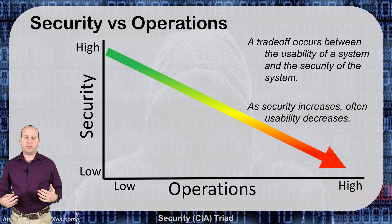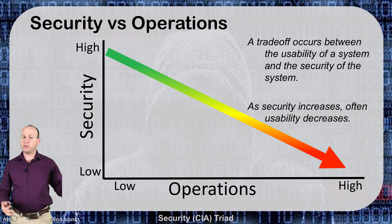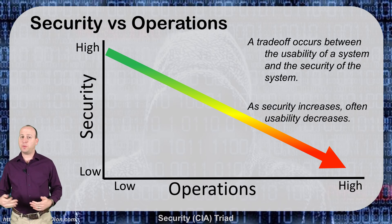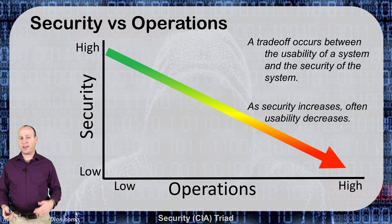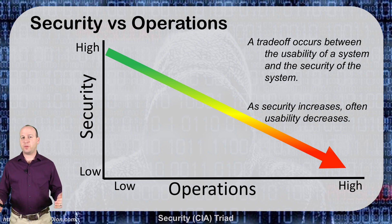The last thing to discuss is the trade-off that occurs between operations and security — and it always happens. In a workplace, you want high operations to be productive and make money, but you also want good security. As you increase security, operations often suffer. For example, requiring everyone to log in with a username, password, and token is harder on operations and slows things down, but gives much better security. Conversely, letting everyone log in with a shared account gives zero security but is very quick and efficient. As an attacker, we're always looking for where operations has taken over and security has lapsed — for example, if five people share the same username and password, I can use social engineering to get those credentials and break into the system.